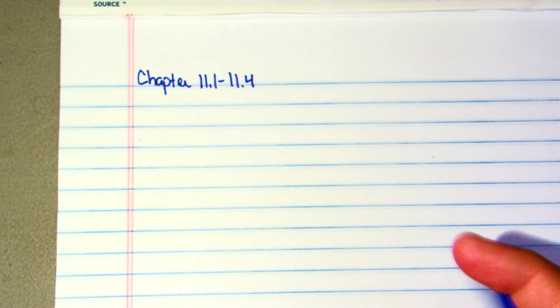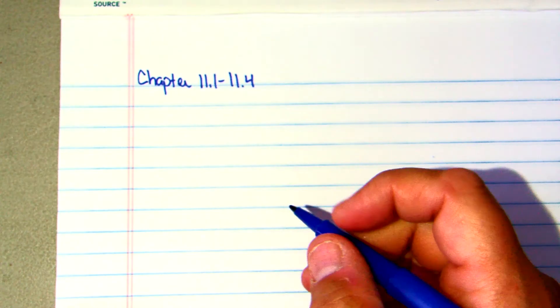All right, so this is junior high math. The test will be Friday, April 5th. It's going to cover sections 11.1 through 11.4. 11.1 deals with relations and functions. Now one thing that seems to be one of the hard problems on the test would be to write a function value.